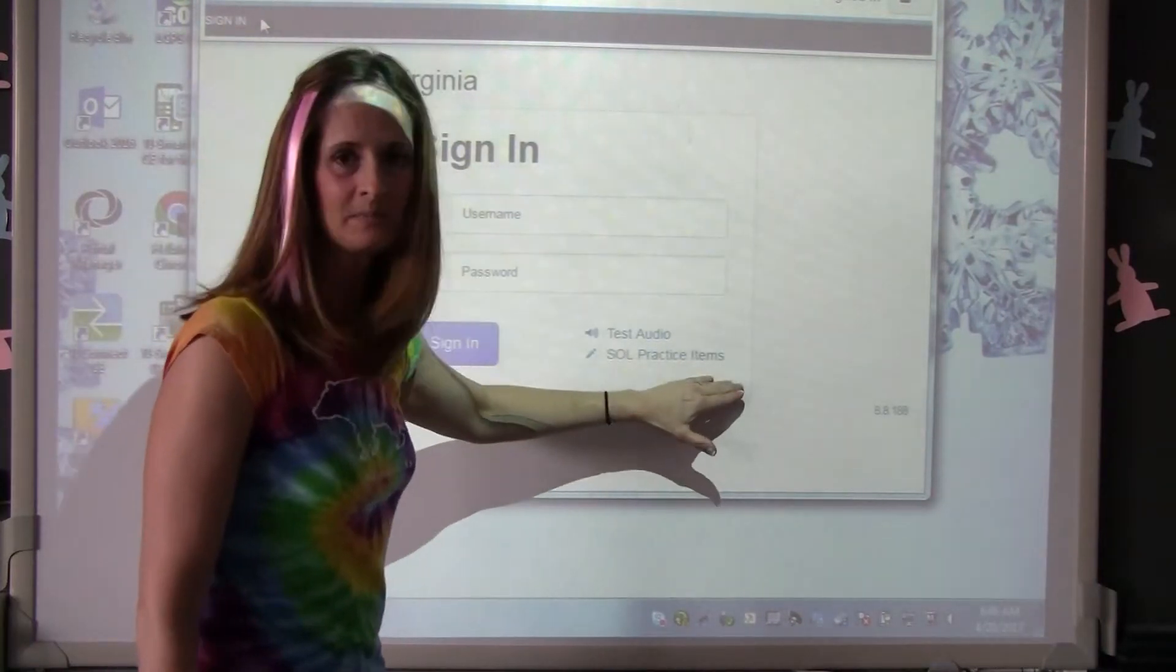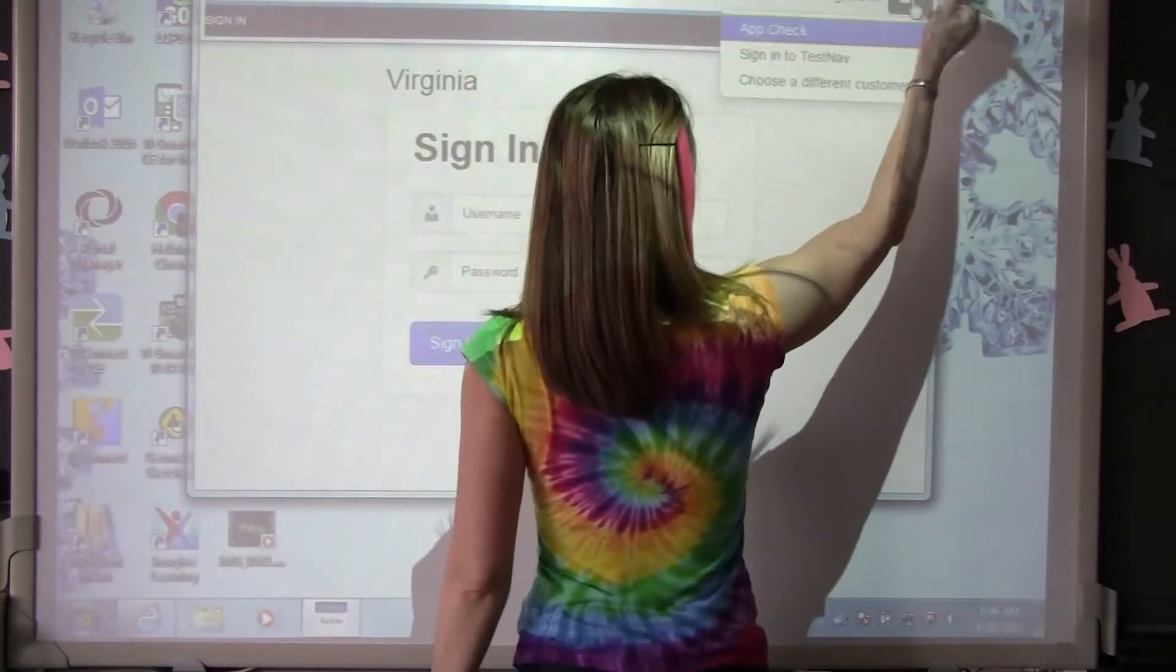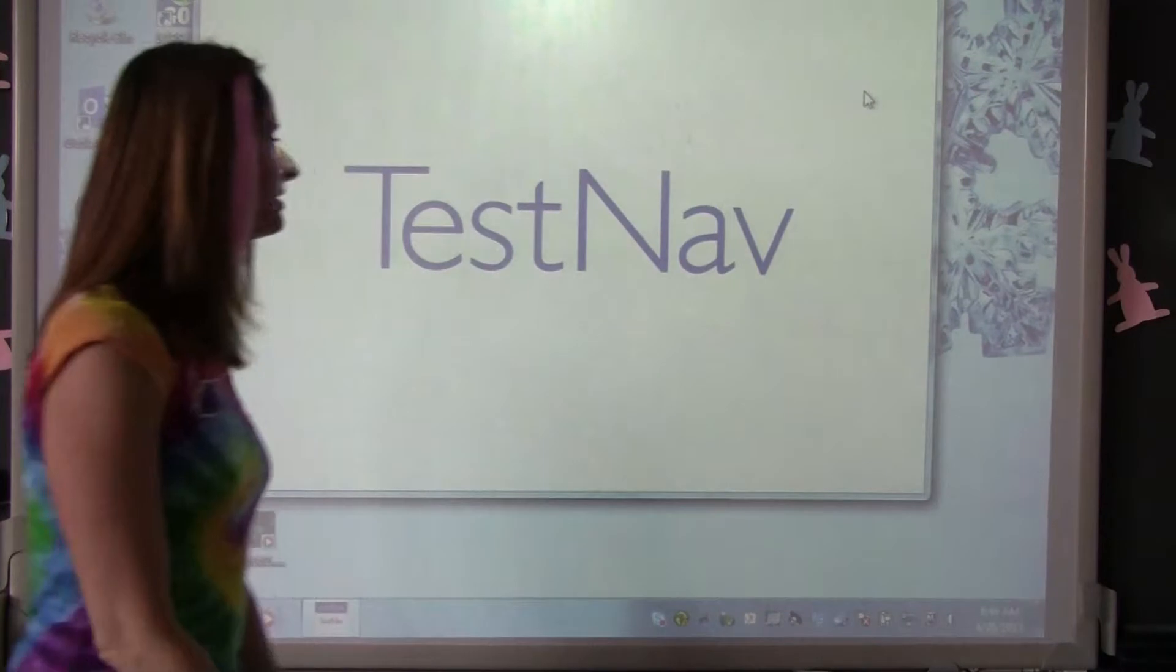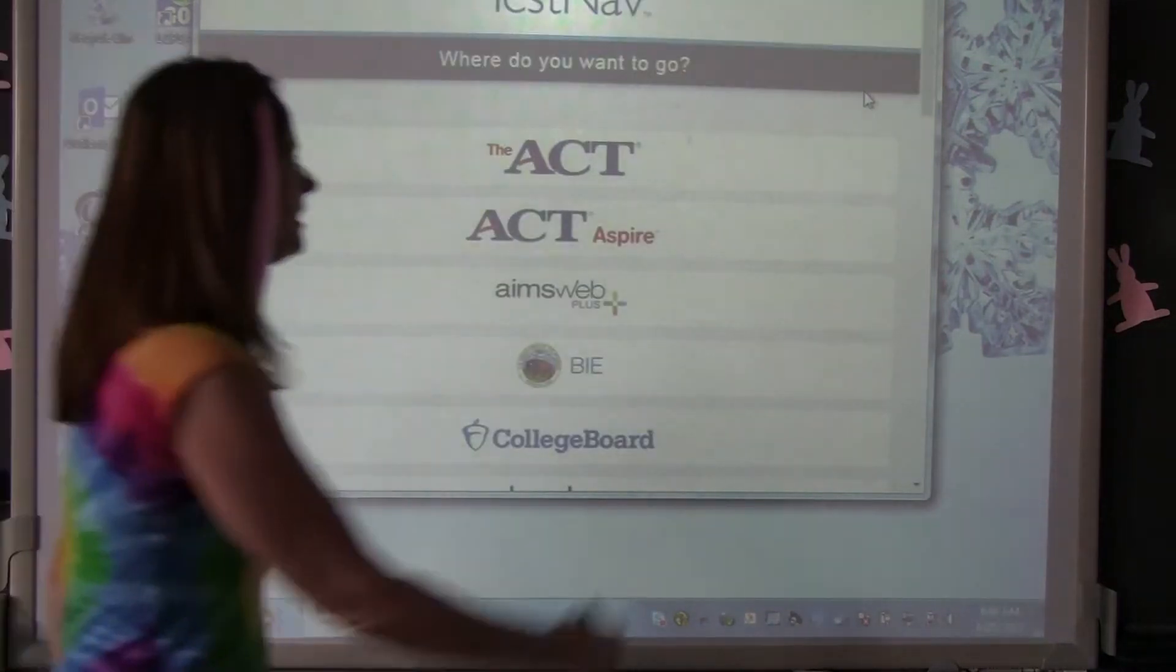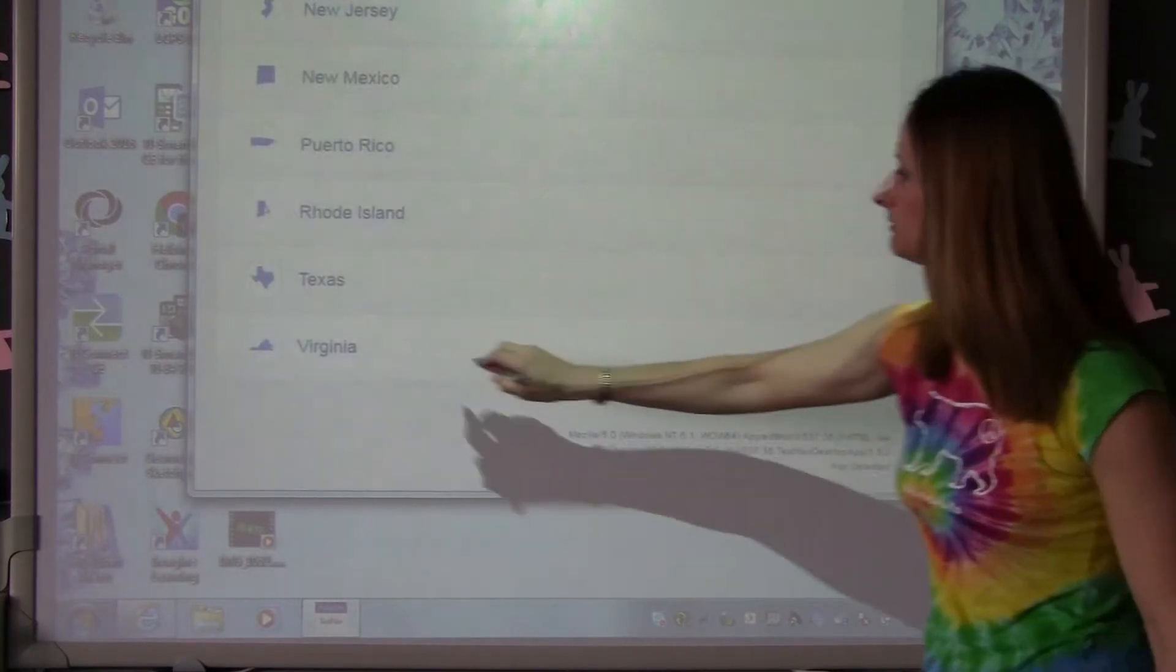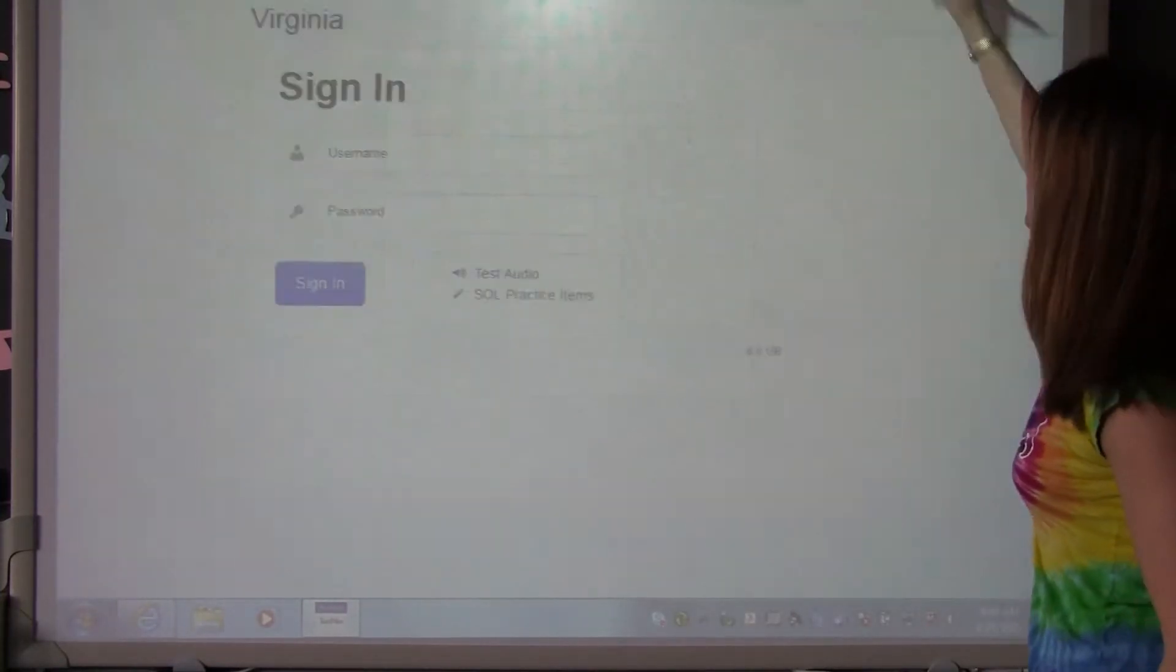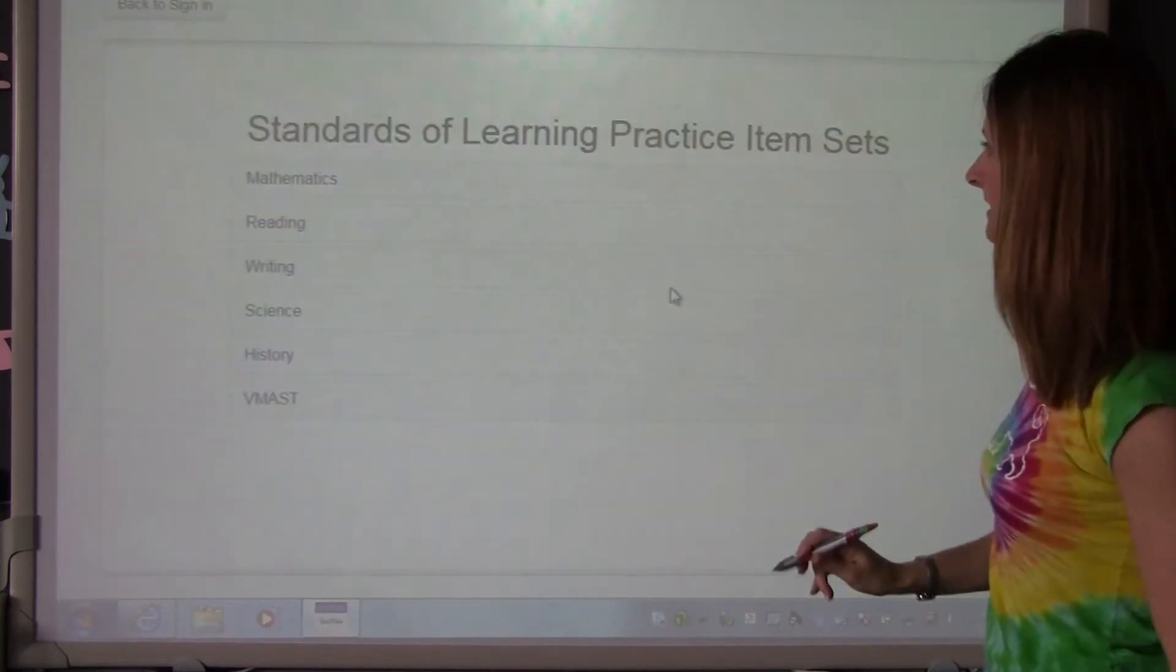If you click on SOL practice items, it'll go right to what you need. But if you don't have it, you can go up here and choose a different customer, scroll down to Virginia, and then you'll have it.